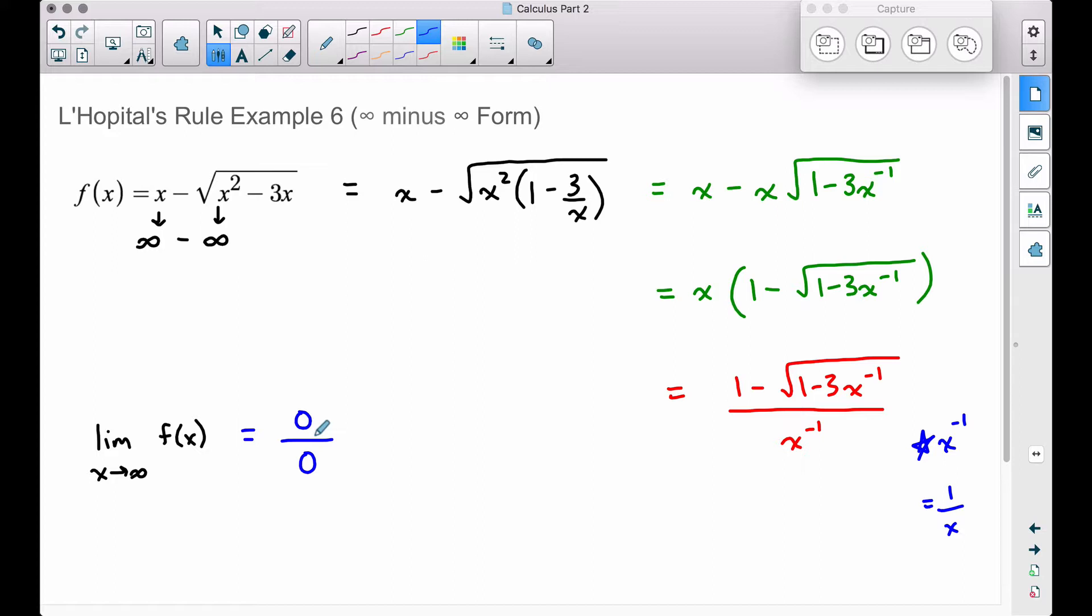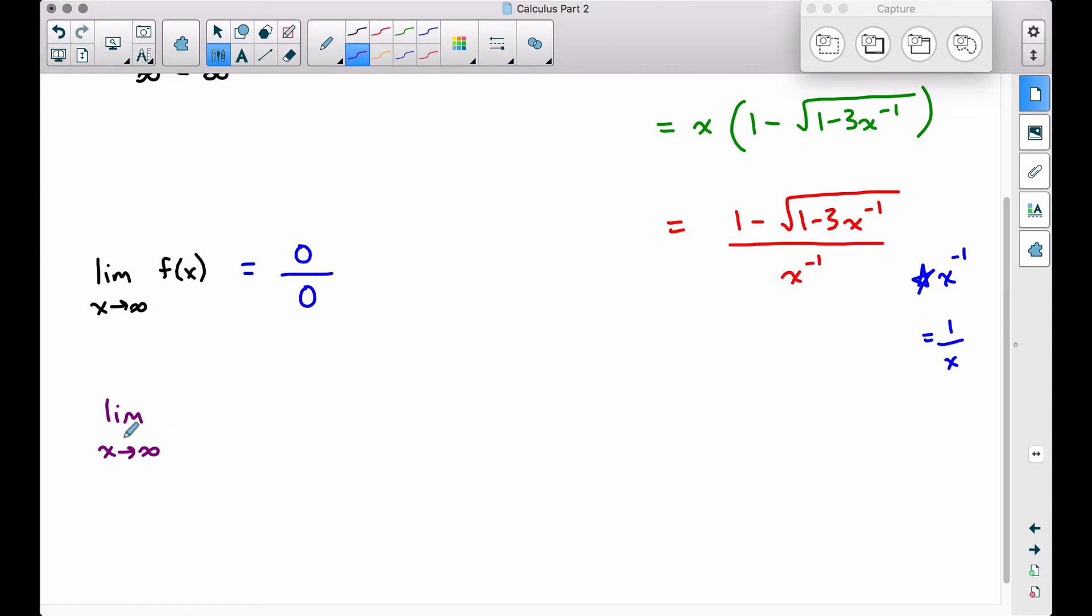This means we can apply L'Hopital's rule. And I tell you what, before we apply L'Hopital's rule, let's just go ahead and rewrite this one more time to make differentiating a little bit easier. I want to take this square root and write it as something to the 1 half power. That's how we can always write square roots. So we have 1 minus 3x to the negative 1 power, and I'm going to leave my denominator the same.